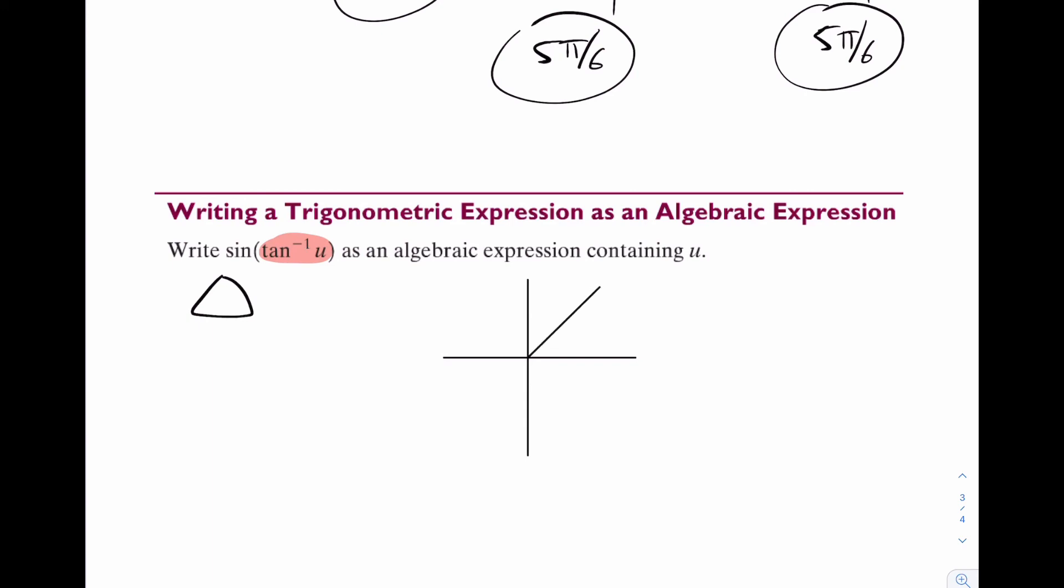So let's draw a triangle in quadrant one like that. Let's call that theta. And here's the trick. Think of u as u over one, because now I can write this as u and one. Now by doing that, it's interesting because now I can actually find hypotenuse.